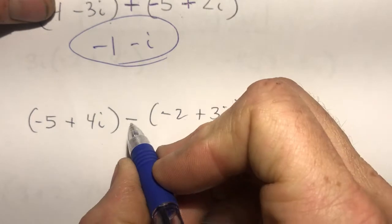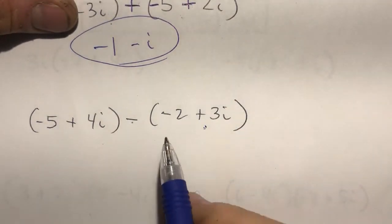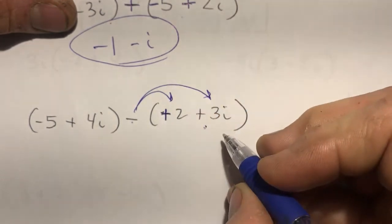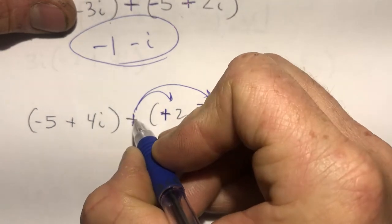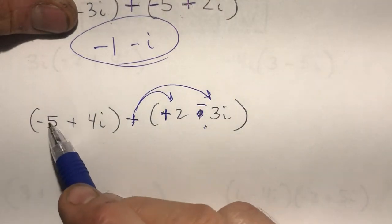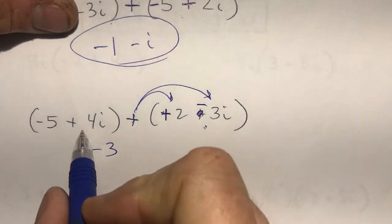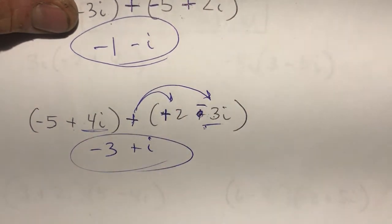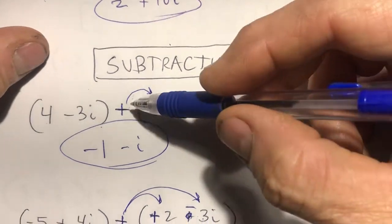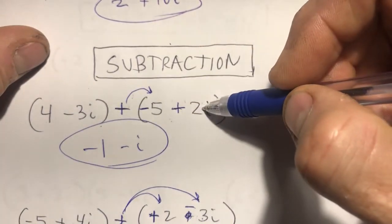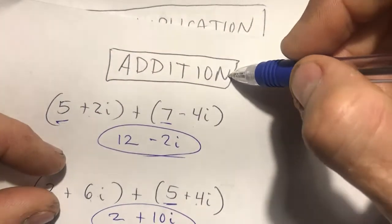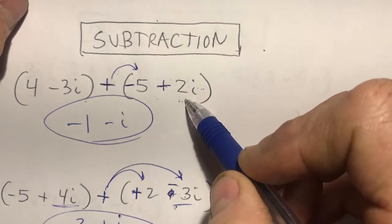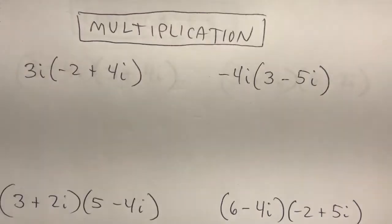Here I'm subtracting this complex number from the first one, so I distribute that minus into the expression. That turns the minus into a plus and the plus into a minus. Now I just add: negative 5 plus positive 2 is negative 3, and on the imaginary parts, positive 4 plus negative 3 is positive 1i. On subtraction, just distribute your minus and then add like terms.